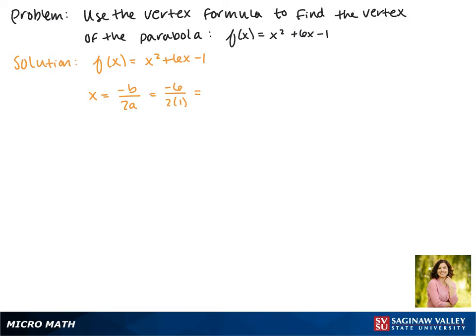So we have -6 divided by 2 is -3. This is our x value, and to find the y value we have to plug -3 back into our equation.